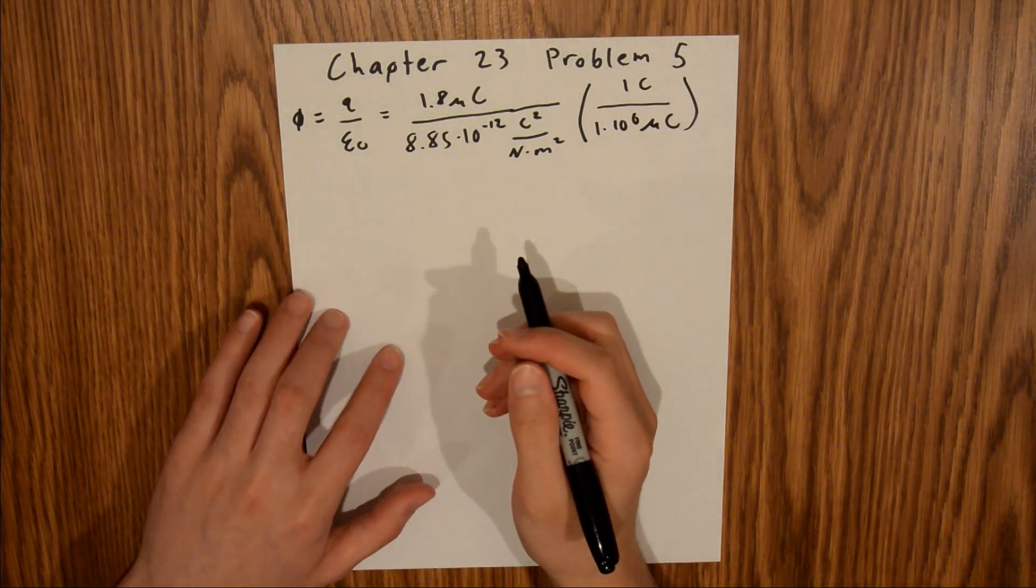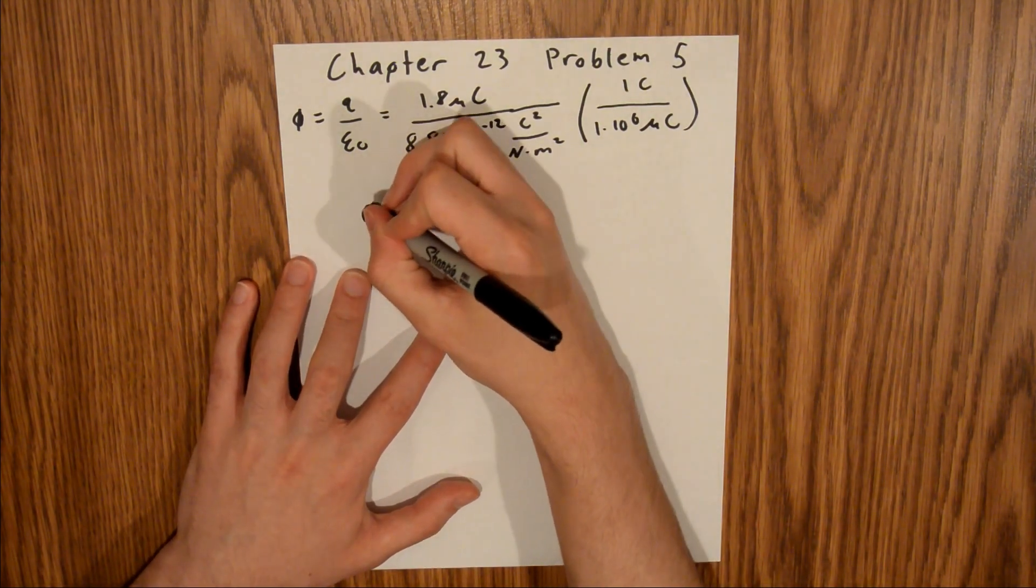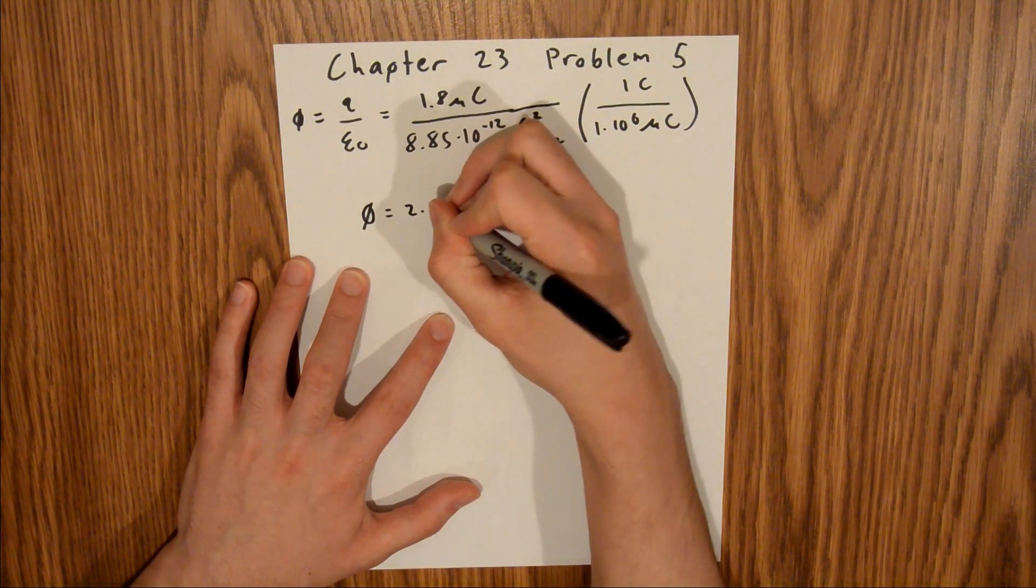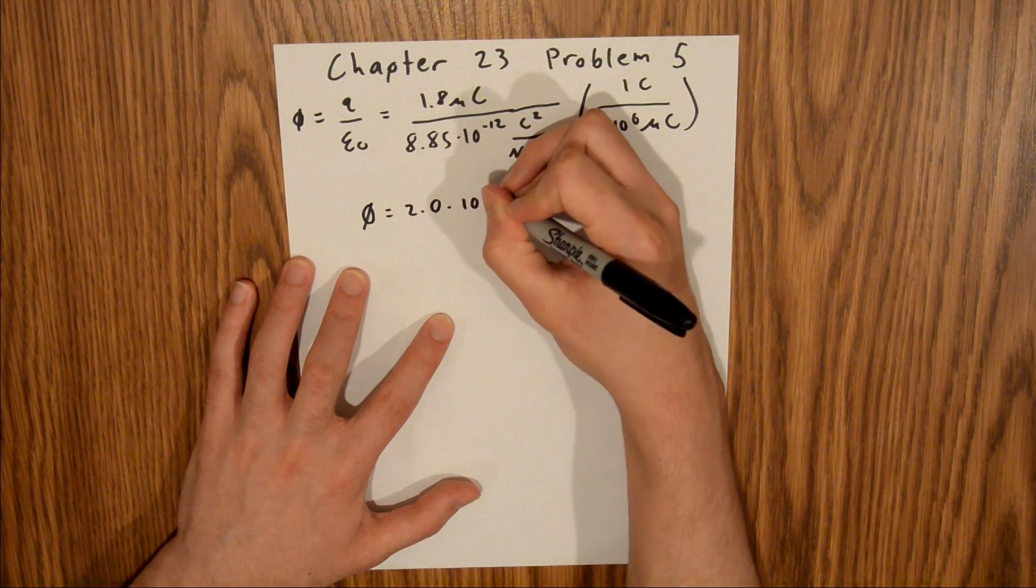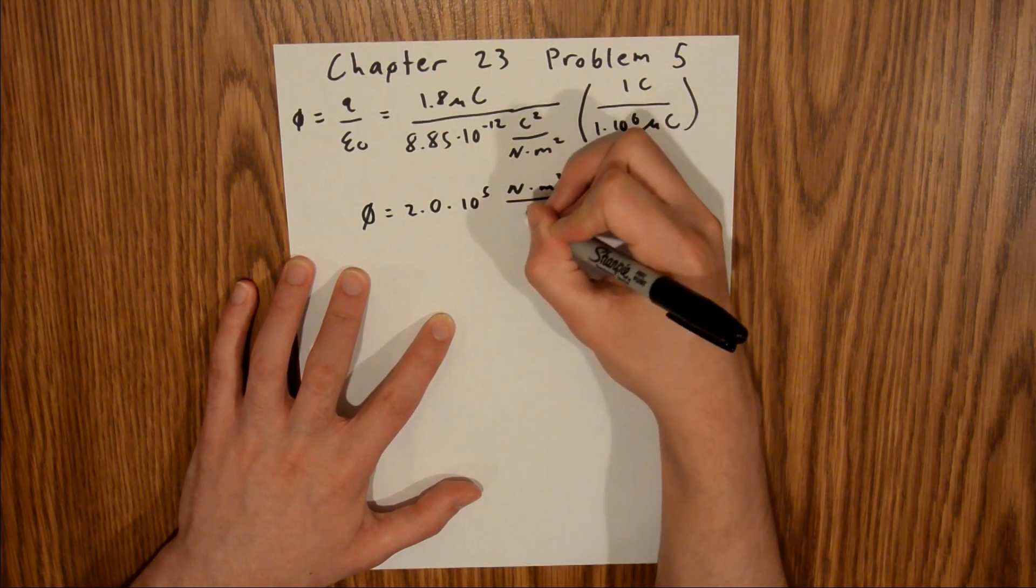If you plug that into your calculator, you will find that the net electric flux is equal to 2.0 times 10 to the fifth newtons times meters squared per coulomb.